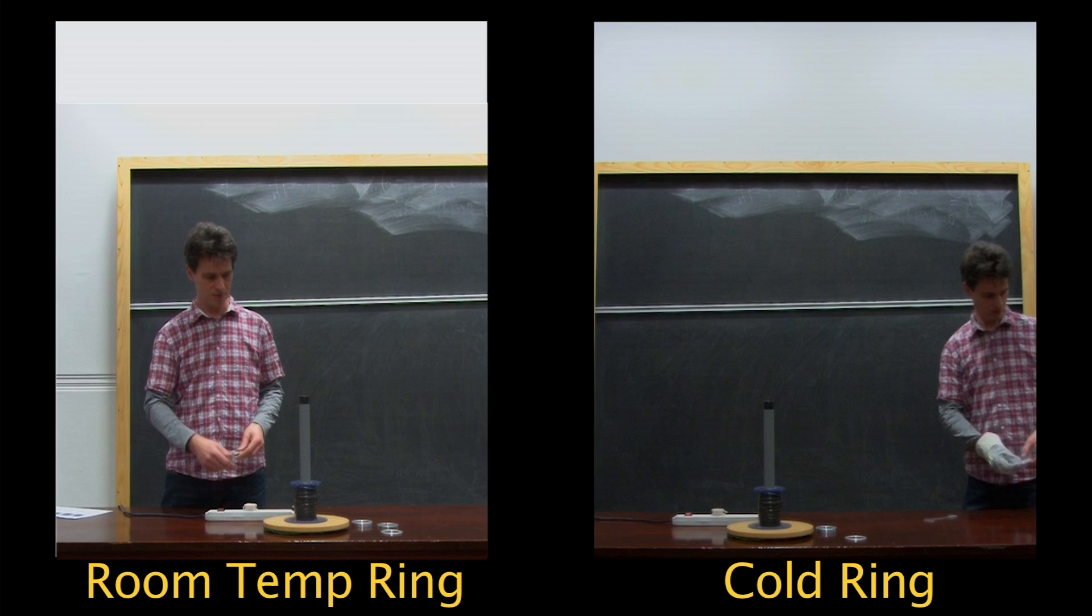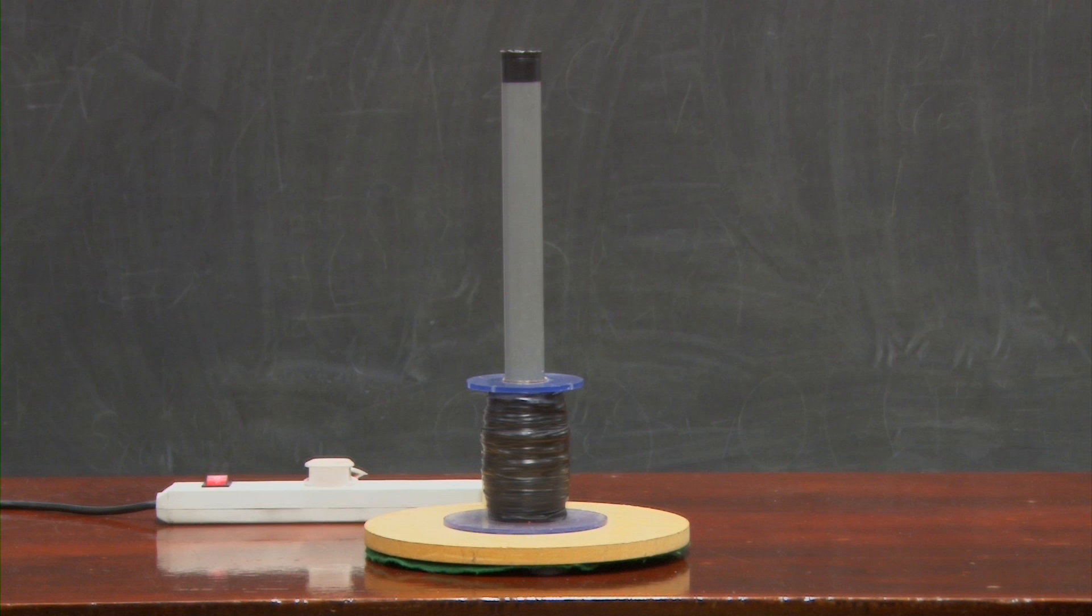We've seen what happens when a ring is placed right on top of the coil and the supply is then switched on. What if we start with the current already flowing?